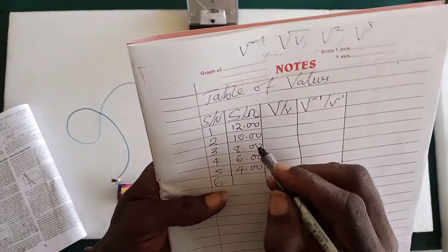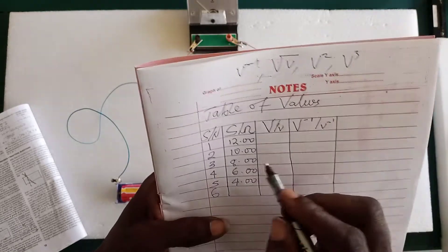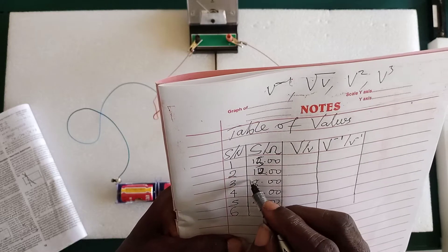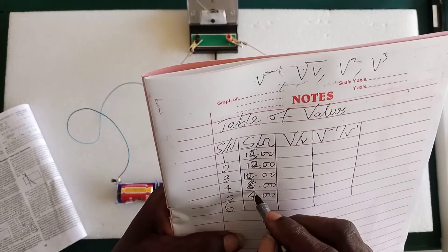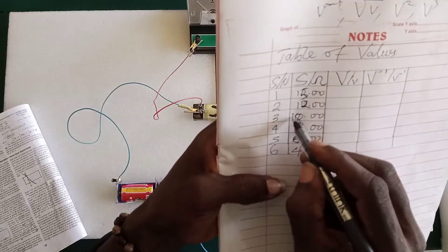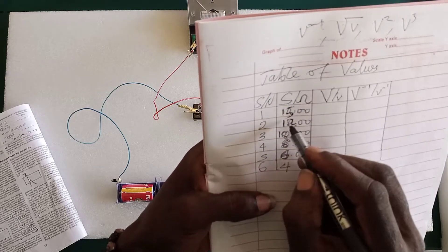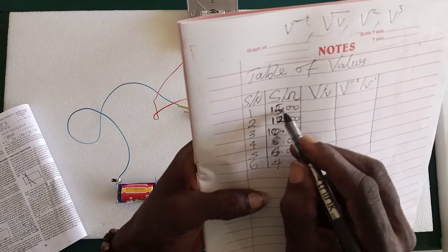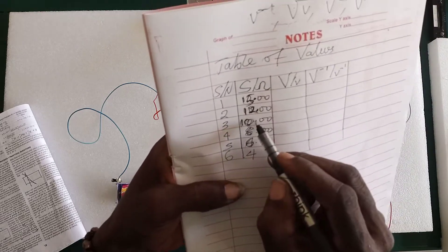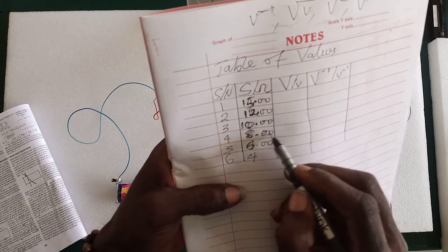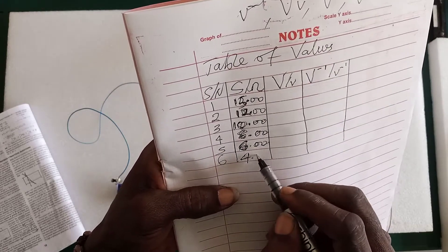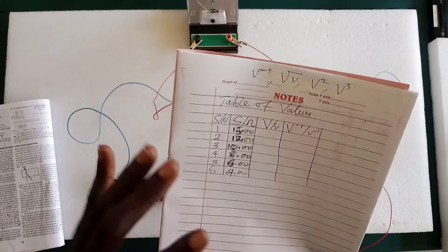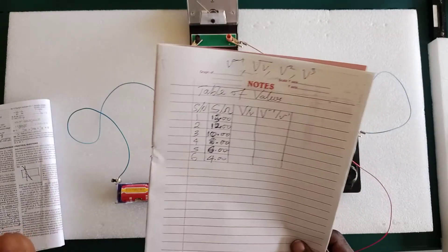The six resistance values are: 15, 15, 12, 10, 8, 6, and 4 ohm. Record them as: 15.00, 12.00, 10.00, 8.00, 6.00, and 4.00. You must record your table of values exactly this way. The table of values carries the highest marks — answer two questions correctly and you get 50 over 50, earning your straight A's in physics.